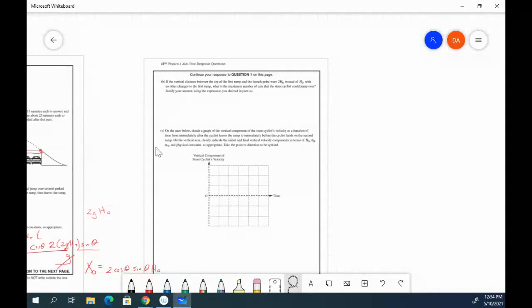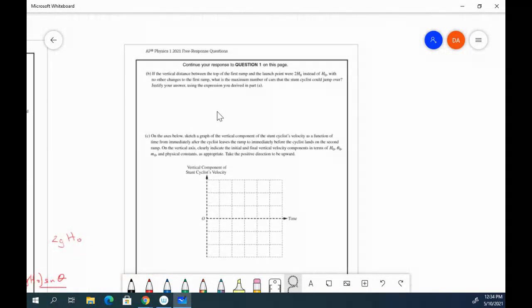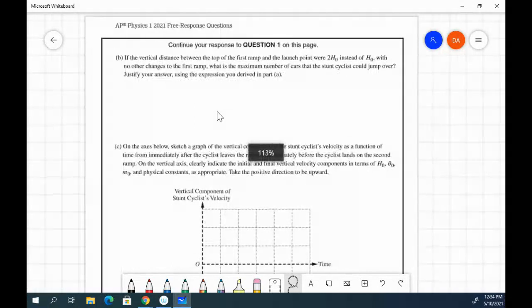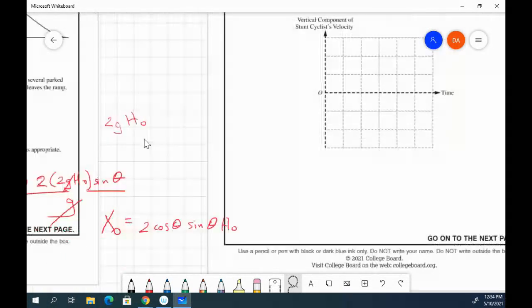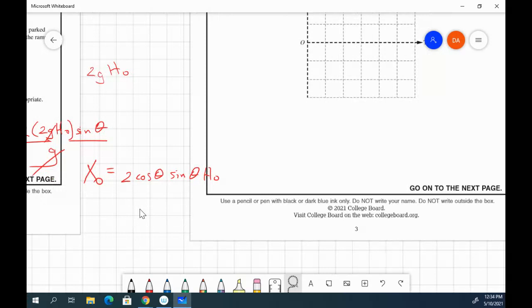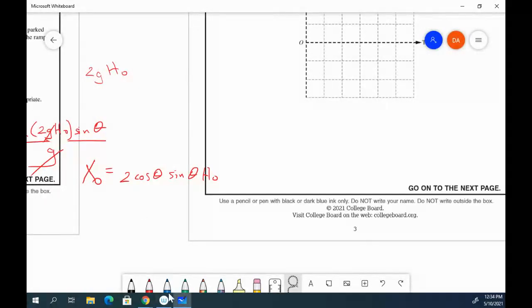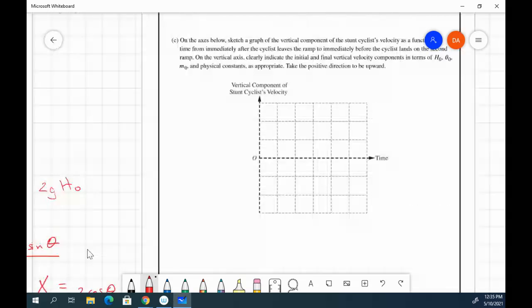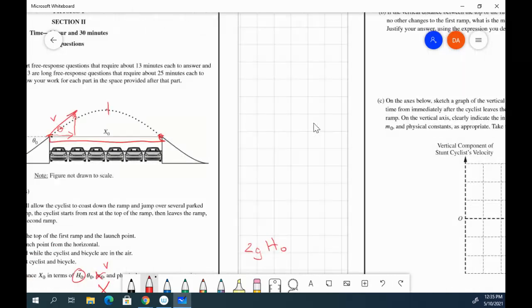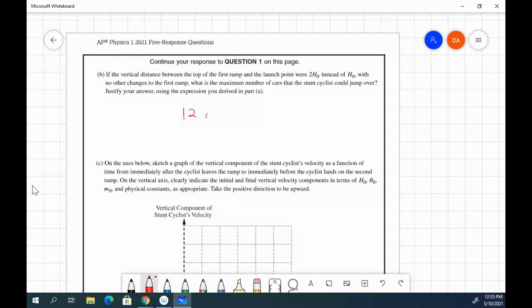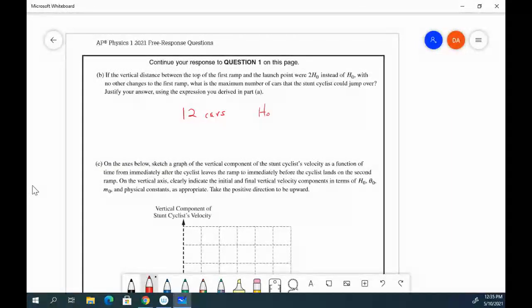Here's an easier problem, because that took some time. We've got the vertical distance between the top of the first ramp and the launch point was 2h0 instead of h0. This is a linear function for the most part. Or rather, these are directly related, x0 and h0. So because they're directly related, any change to this one will have the same resulting change in that value. So for that reason, since they jumped over 6 cars originally, now we're going to jump over 12 cars because h0 and x0 are directly proportional. There's no exponential or square root function or anything like that.